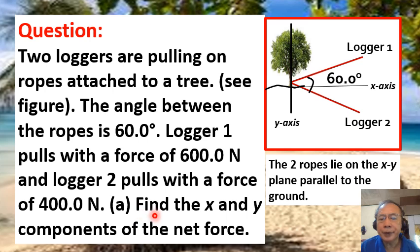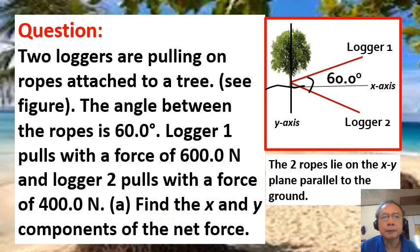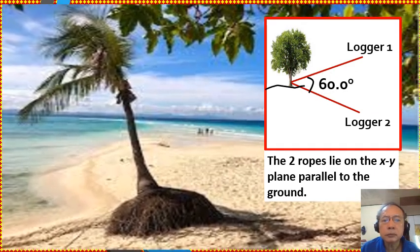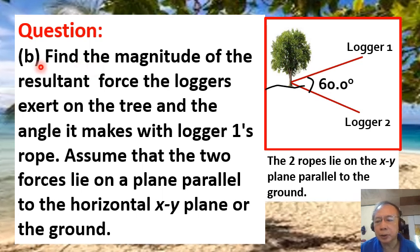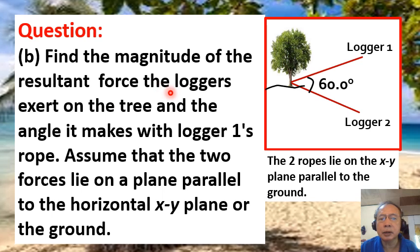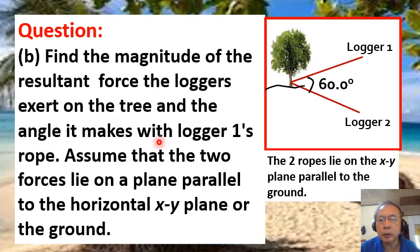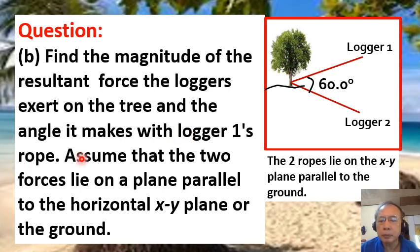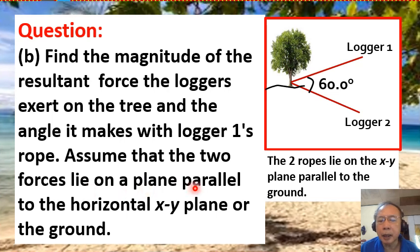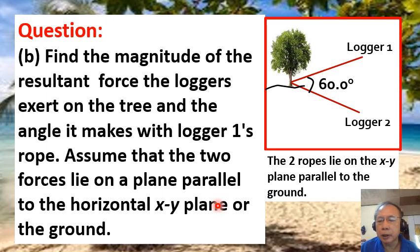Question A: Find the x and y components of the net force. Question B: Find the magnitude of the resultant force the loggers exert on the tree and the angle it makes with Logger 1's rope. Assume that the two forces lie on a plane parallel to the horizontal xy plane, or the ground.